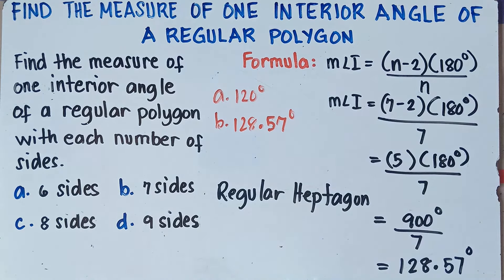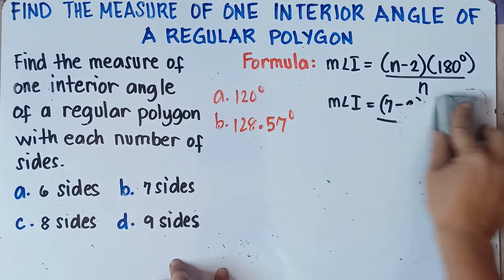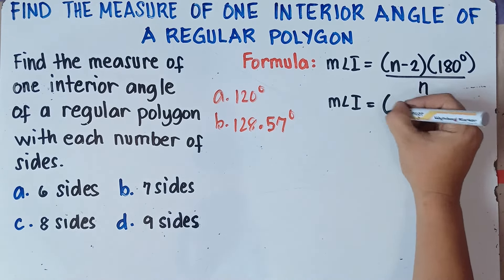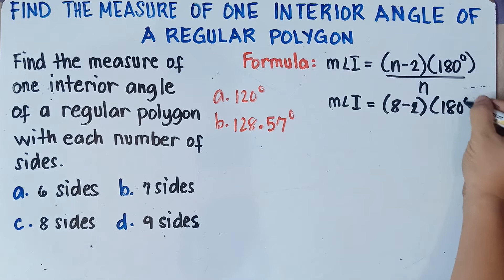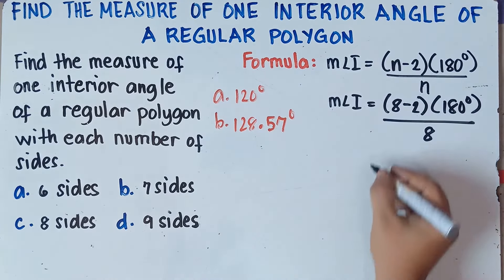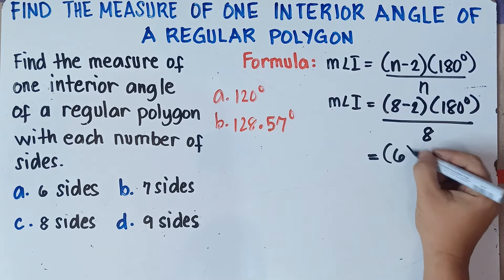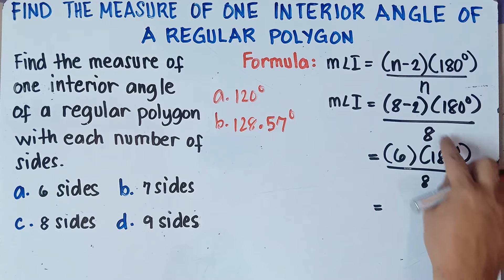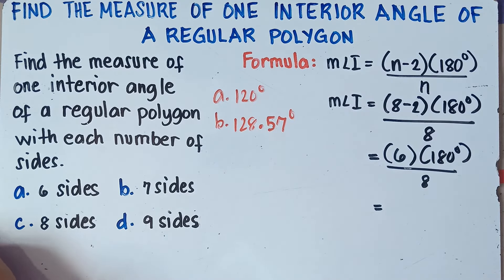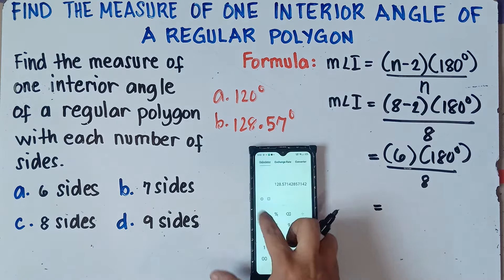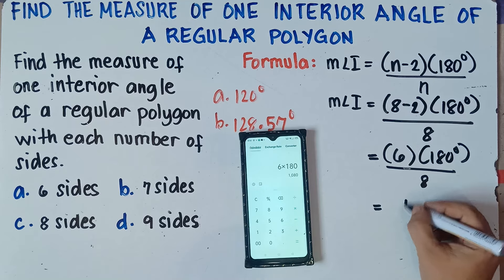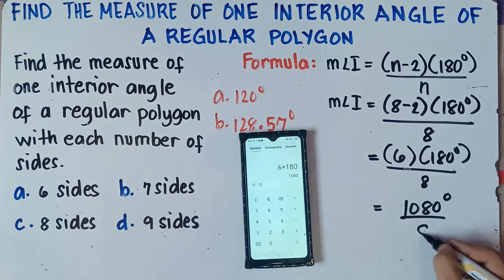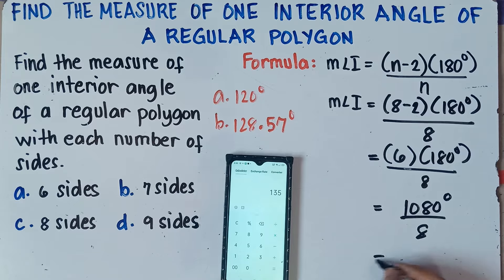For letter C, we have 8 sides. Substitute n equals 8: (8 minus 2) times 180 degrees, over 8. So 8 minus 2 is 6, times 180 degrees, divide by 8. Use your cell phone or calculator. 6 times 180 equals 1,080 degrees, and then divided by 8 gives us 135 degrees.